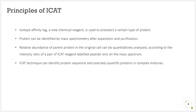The ICAT technology uses an isotope affinity tag, a new chemical reagent, to pre-select a specific type of protein. After separation and purification, the protein is identified by mass spectrometry. According to the intensity ratio of a pair of peptide ions labeled with different ICAT reagents on the mass spectrum, the relative abundance of the parent protein in the original cell is quantitatively analyzed. This method identifies protein sequence and precisely quantifies proteins in complex mixtures.